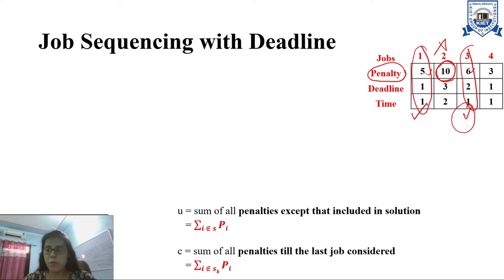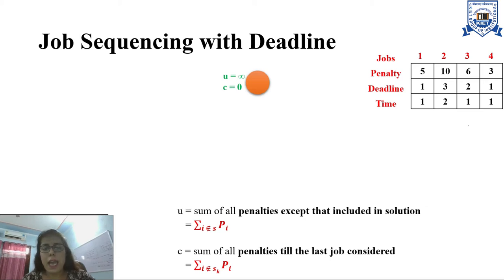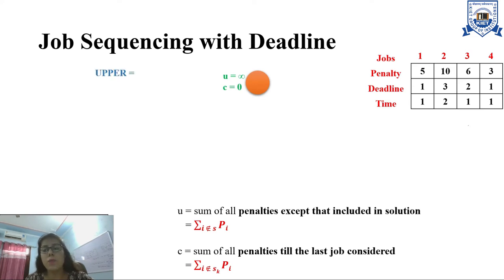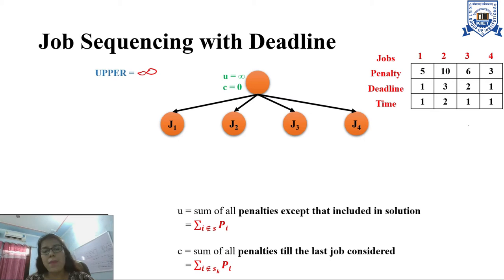Now we will look at the solution of this problem and how we are going to proceed. We start with a root node. We have not considered any job at this point. Since we have not considered any job, we associate U and C as 0 and infinity respectively. Because up till now we have not excluded or included any job, the upper bound is infinity. I have also included a variable 'upper' to maintain the lowest value of U encountered so far. So far, U is infinity, so this value is infinity. From this point, I have four options: I can include J1, J2, J3, or J4. We will calculate the corresponding U and C values one by one.